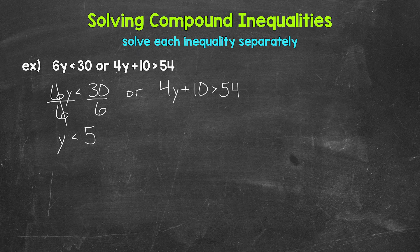Now let's solve 4y plus 10 is greater than 54. We have multiplication and addition, so we need to undo the addition first. The inverse operation is subtraction. So let's subtract 10 from the left side and the right side as well. Now the 10s on the left cancel each other out. So we have 4y is greater than 44.